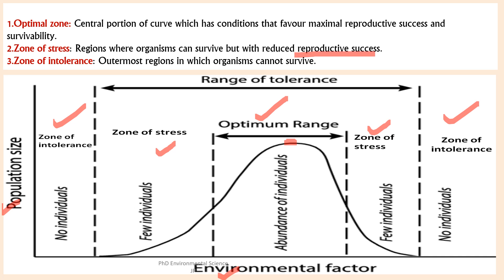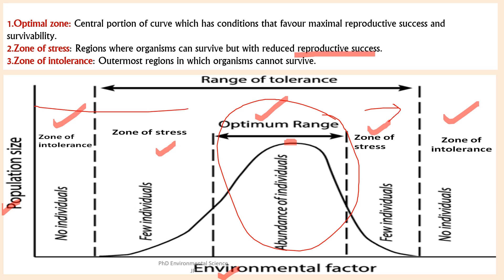The range of tolerance shows the full spectrum of conditions under which the species can exist, even if not all are ideal. The highest population density occurs within the optimum range, and population size decreases as conditions move towards the extremes — the zones of stress — reaching zero in the zone of intolerance.